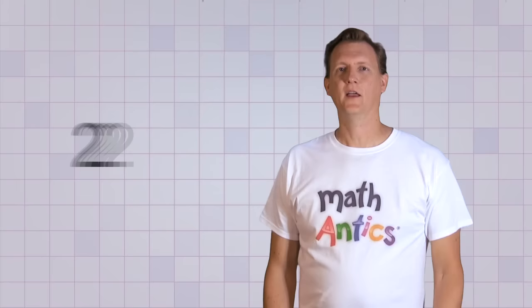Okay, so 1 was too small, it gave us too big of a remainder. And 3 is too big, there wouldn't be any remainder at all, and the groups wouldn't be equal, which causes big problems. So let's try 2.